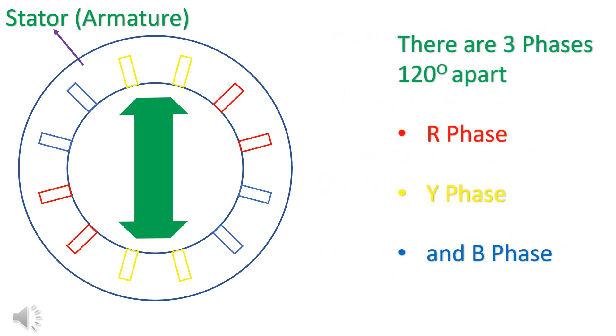There are 3 phases but 120 degree apart: R phase, Y phase, and B phase.